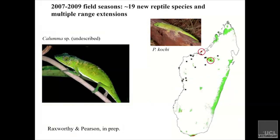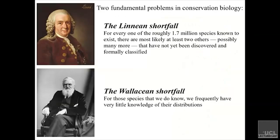There are statistical assessments we can do to give us confidence, and there is significant coincidence between known areas of endemism and the predicted areas. Many areas here simply haven't been professionally surveyed for amphibians and reptiles before. We've been sending field crews out with these maps to do surveys. The results have been really encouraging — in the 2007 to 2009 field seasons we found approximately 19 new reptile species and a whole bunch of range extensions. For example, we found range extensions for Phelsuma cochi — shown as red points in addition to the known black populations.